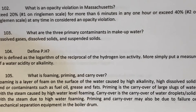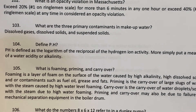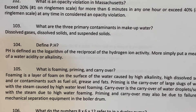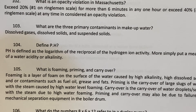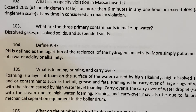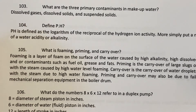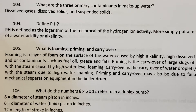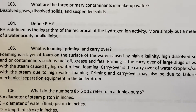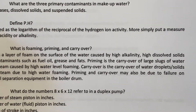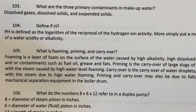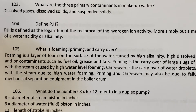What are the three primary contaminants in makeup water? Dissolved gases, dissolved solids, and suspended solids. Define pH: pH is defined as the logarithm of the reciprocal of hydrogen ion activity — more simply put, a measure of water acidity or alkalinity.